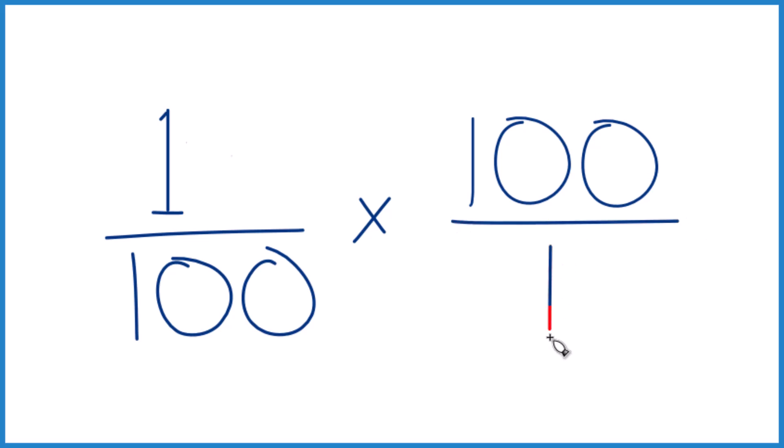You could think of 100 as 100 over 1, because 100 divided by 1 is still 100. But now everything lines up, which is kind of nice.